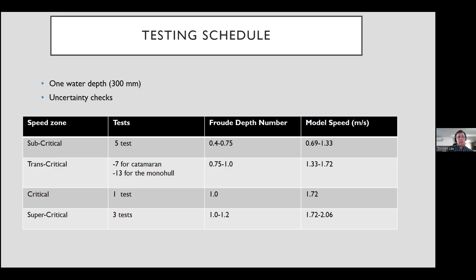We also note here that we did seven tests for the catamaran and 13 for the monohull. The reasoning for this was we sadly just ran out of time for the catamaran to do another set of runs, so mainly the monohull got the majority of the runs.